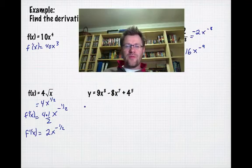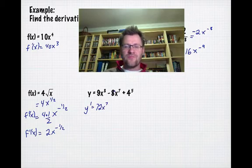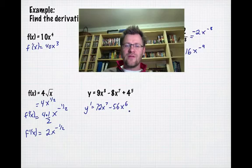With multiple terms, take each term separately. y' will be 8 times 9, which is 72x⁷, then 8 times 7, which is 56x⁶. For 4 to the power of 5, don't be fooled—there's no x there, so it's just a constant, and the derivative is 0.